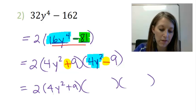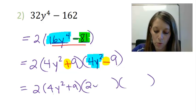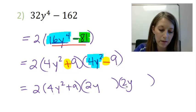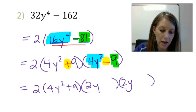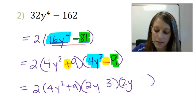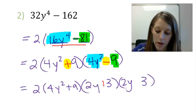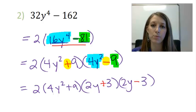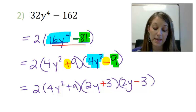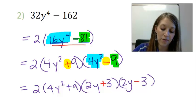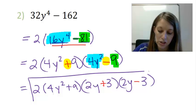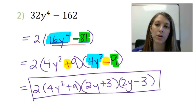So I'm just going to copy down my 2, my 4y squared plus 9, and set up two sets of parentheses to factor this last difference of squares here. Factors to give me 4y squared are 2y times 2y. Factors to give me 9 are 3 times 3. And again, the signs are always one addition and one subtraction. And at this point, we are finally finished factoring example number 2.